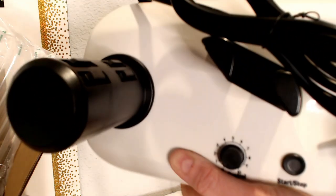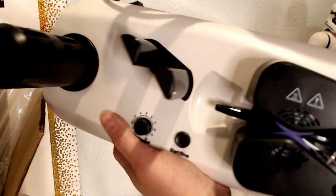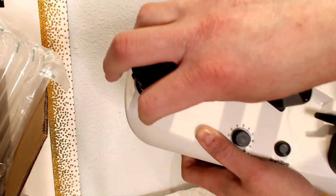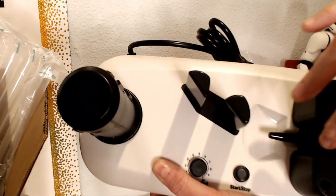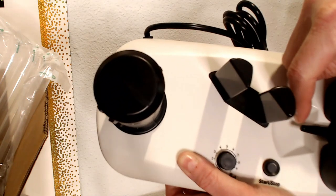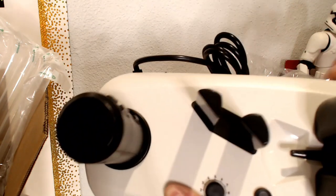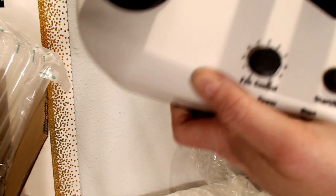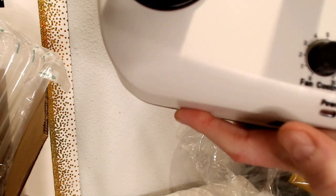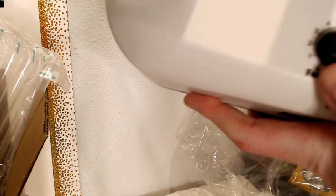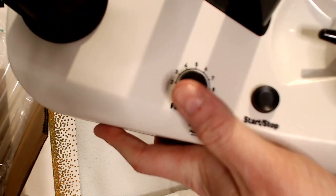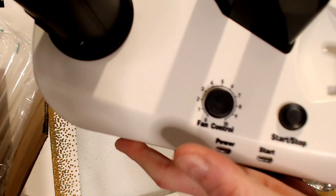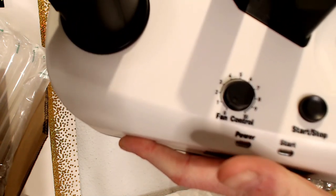You basically put the bubbles here and it goes through this channel right here. It seals it and blows the air through. The air blower is right here and it seals them right here and pops out. You can control the density right here with the fan control, so you can control how hard or soft the bubbles will come out. This is the little machine. I will put the link down below if you want to try it. There's the on-off button right there.